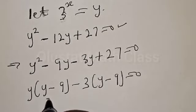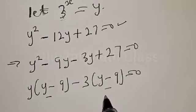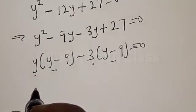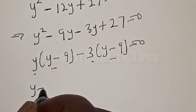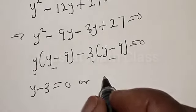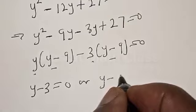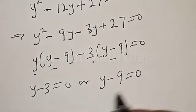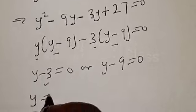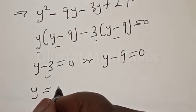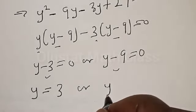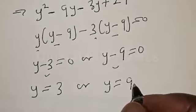Therefore we have y(y minus 9) minus 3(y minus 9) equal to 0. We have y minus 9 common in both terms, so we get (y minus 3)(y minus 9) equal to 0. Therefore, y minus 3 equal to 0, or y minus 9 equal to 0. Then y is equal to 3, or y is equal to 9.